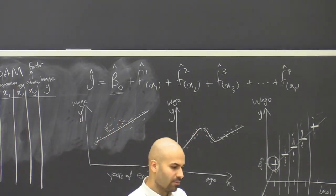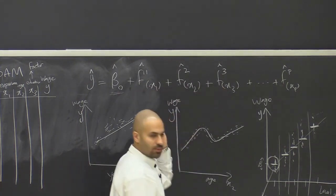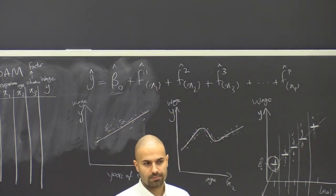The software makes sure that these estimates would give us the lowest RSS. Any other questions?